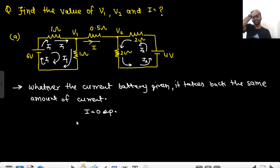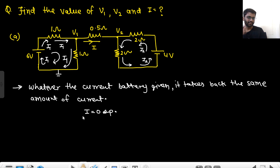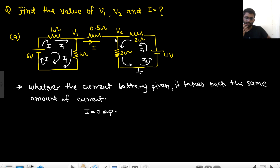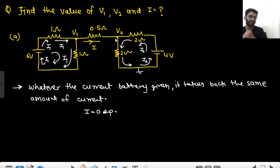Can you determine the value of V1 and V2? There is no ground mentioned, but we can assume any ground anywhere. If I assume ground here, the potential of V1 would be 3 volts, and since V1 equals V2, both equal 3 volts. Now if I assume ground at the other point, V2 would be 2 volts, so V1 equals V2 equals 2 volts. If I assume ground elsewhere, it will be 4 volts.